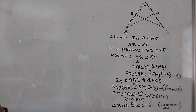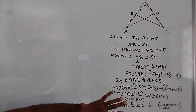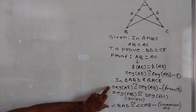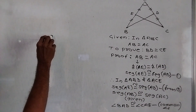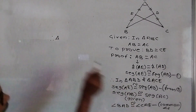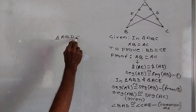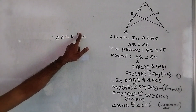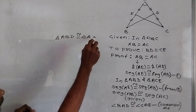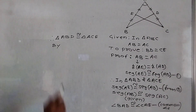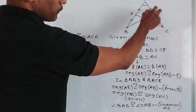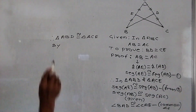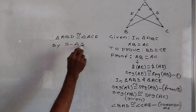Now, when any two triangles are congruent, there is a minimum need of three parts or factors to be congruent. We have: this side, this angle, and this side — side, angle, side. Therefore, triangle ABD is congruent to triangle CAE by SAS (Side-Angle-Side).